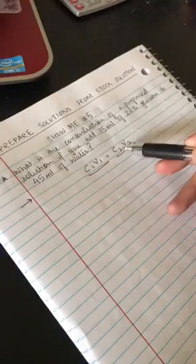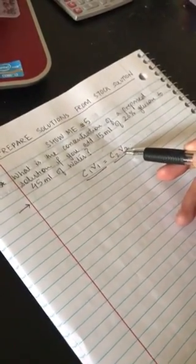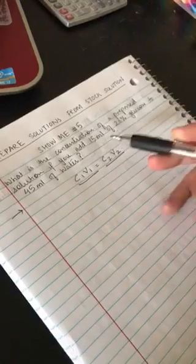Where C1V1 is the concentration and volume of your stock solution, and C2V2 is the concentration and volume of the prepared solution.